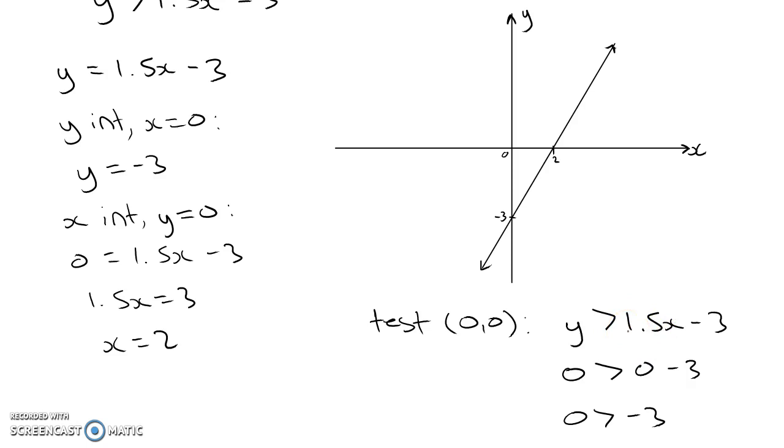And so we can shade everything on this side of the line. And that's what we call a half plane. The solution to a linear inequality with two variables, x and y, is illustrated using a shaded region called a half plane. So we've illustrated by shading this area, the half plane, all of the solutions for this inequality.